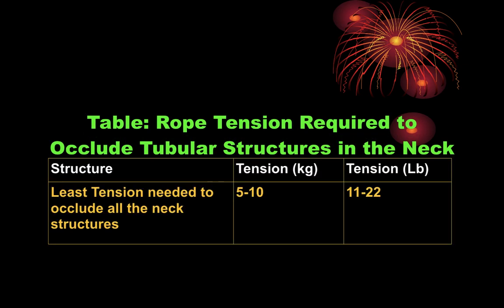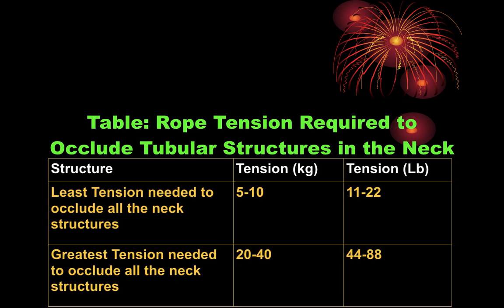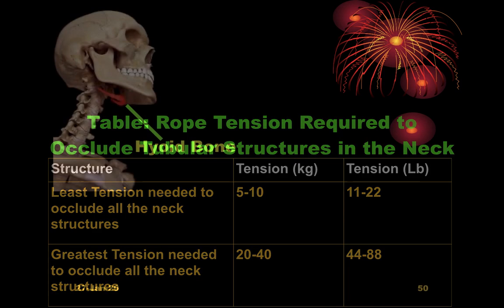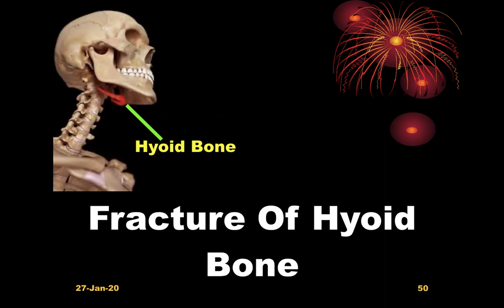The least pressure required to block a structure is 5 to 10 kg, while the maximum tension to occlude all neck structures is 20 to 40 kg.